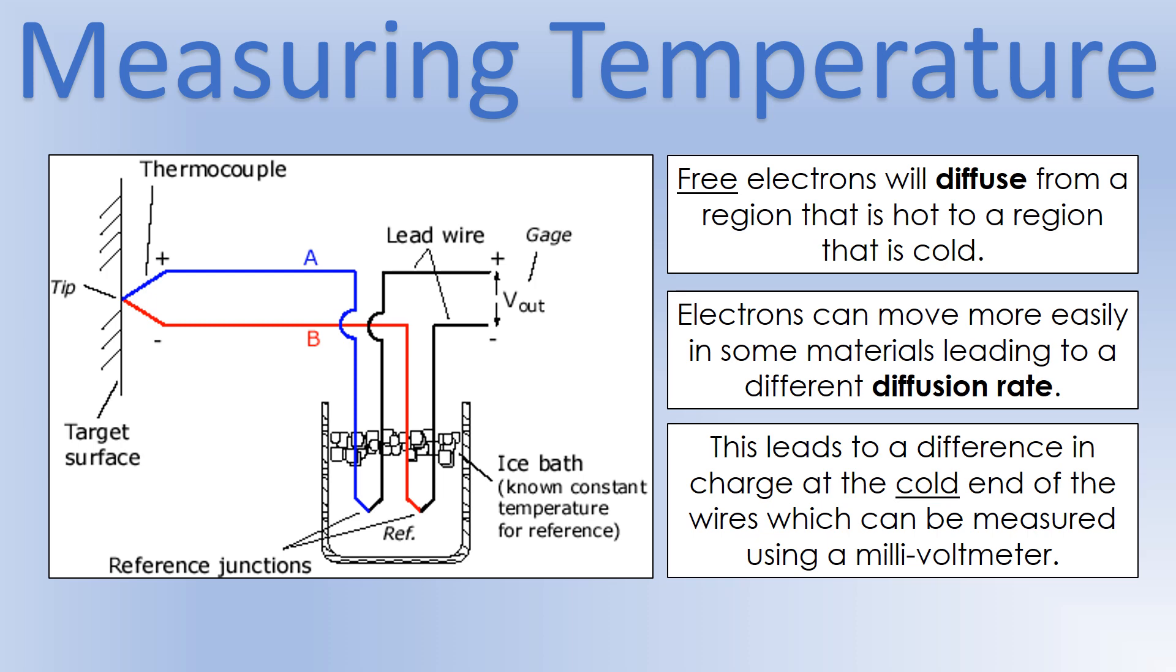So the reason this works is free electrons will diffuse from a region that is hot to a region that is cold. And that's the principle on which this is based. And the other key thing is that in different materials, this diffusion happens at different rates. So those are the two kind of key principles involved here. So that means that the opposite end of A and B, charge starts building up because electrons are diffusing from what's hot to what is cold. And if they're diffusing at different rates, that means we're going to get more charge in one than the other. So we get a difference in the amount of charge, which we also know as a potential difference. And that means we can measure it using a millivolt meter. So it's quite a small change, which is why we need a millivolt meter. But it is a measurable change. Just a quick note. This also works for measuring cold things. So if your target was colder than the ice bath, the electrons would just diffuse the other way and you'd still get a potential difference.